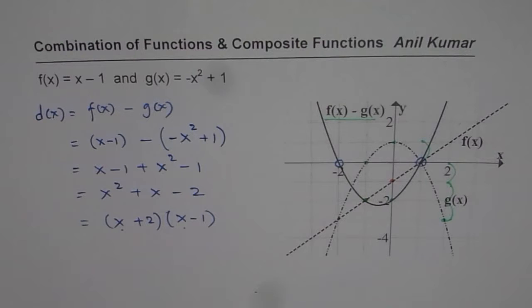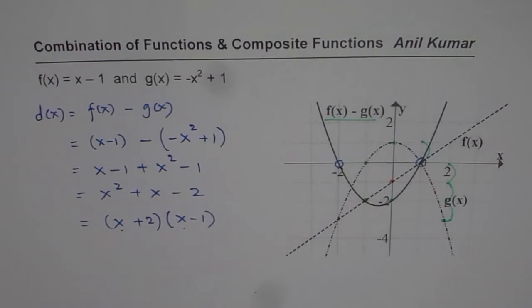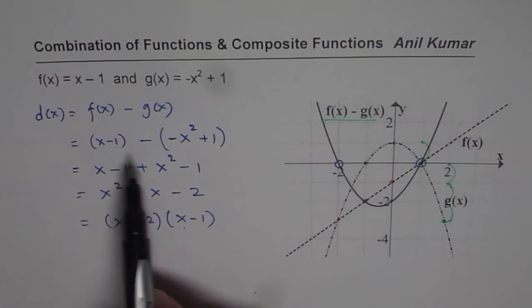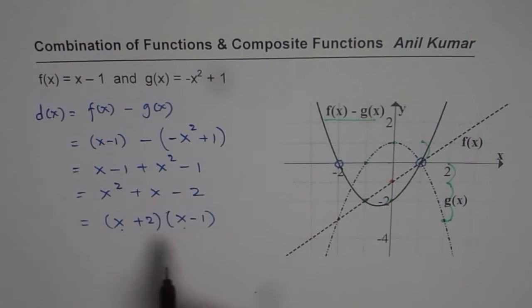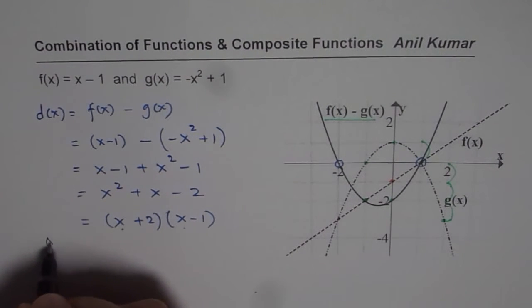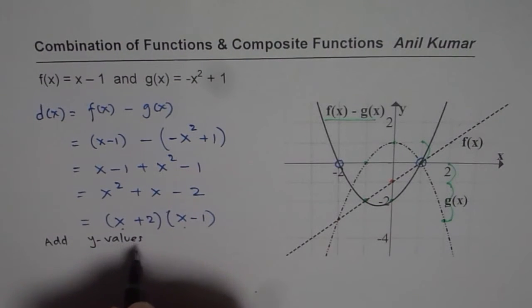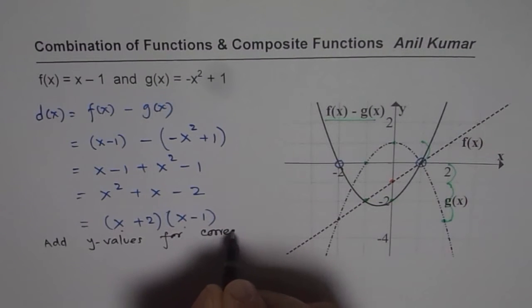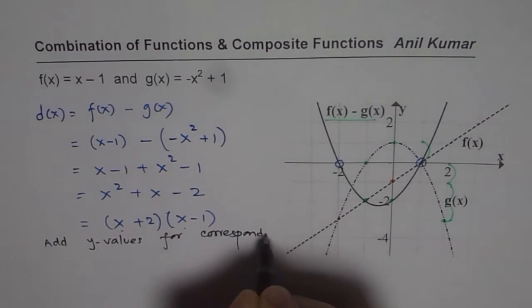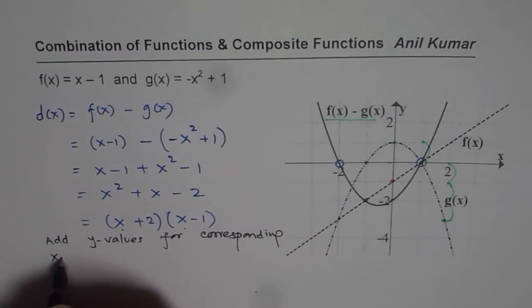Now as an exercise, what you should be doing is, you should plot this graph. That is kind of your answer. So I hope you understand the concept, how to find combination of functions when it is addition or subtraction. When it is addition or subtraction, you can simply add the y values for corresponding x values. So the idea here is to add y values for corresponding x values.